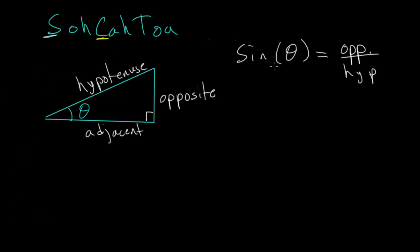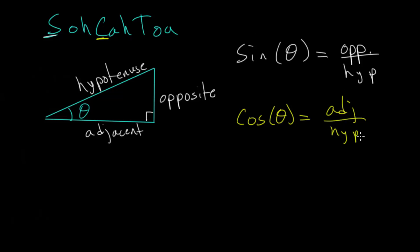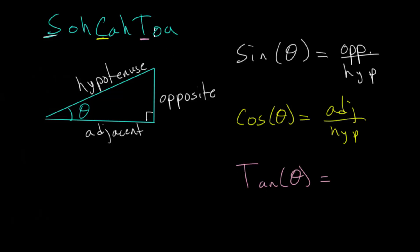The cosine — that's what C is — is defined as the adjacent divided by the hypotenuse. It's always the first letter divided by the second letter once you identify sine, cosine, or tangent. So adjacent over hypotenuse. And then lastly, we have the tangent function — T for tangent. The tangent of our angle is equal to the opposite side divided by the adjacent, so opposite divided by adjacent.